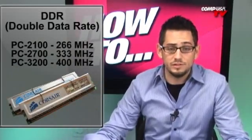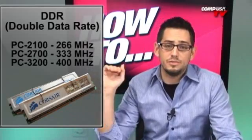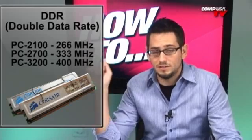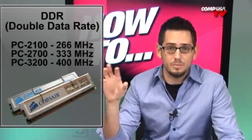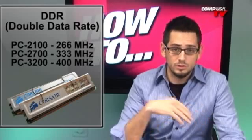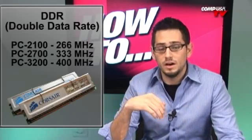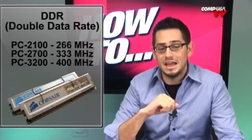The next one after SD-RAM was DDR — double data rate. Those came in three speeds: 2100, 2700, and 3200, which are 266, 333, and 400MHz respectively. Those are going to be a lot of older computers, but not too old. DDR is still kind of expensive — about 50 bucks a gig. Whereas DDR2, the next one down the list, is about 50 bucks for 2 gigs — about half as much, and going down in price.